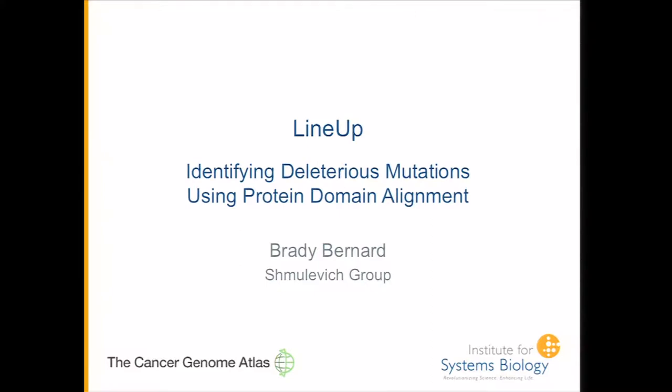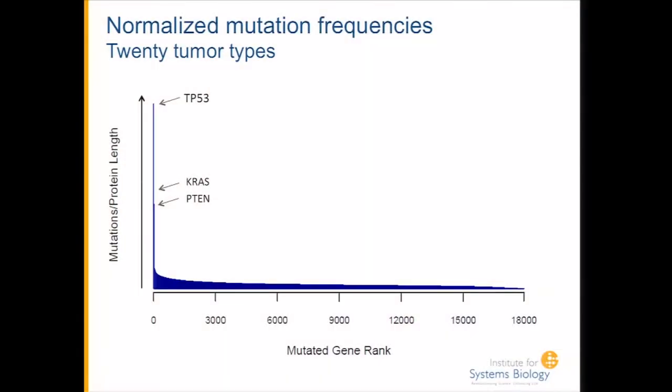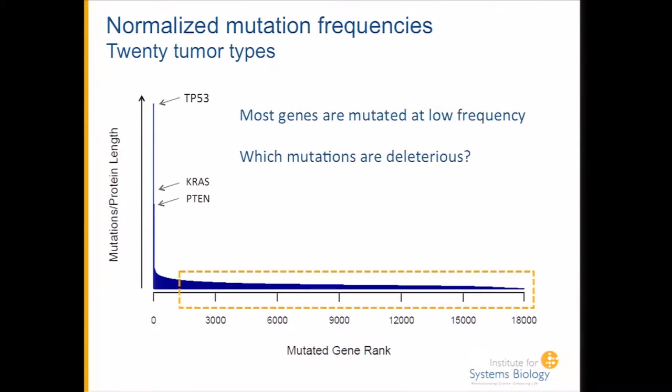Thanks for the opportunity to present a new way of looking at evaluating mutations in TCGA data. We've seen these plots before. If we normalize the frequency of mutations by the protein length and look across many different tumors, there are certain genes that recurrently come up as being very significantly mutated, but there are also a very large number of genes with a low frequency of mutation that may very well have deleterious mutations in them.